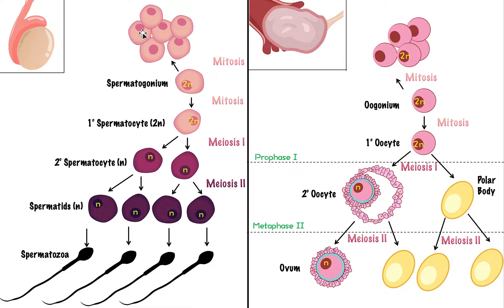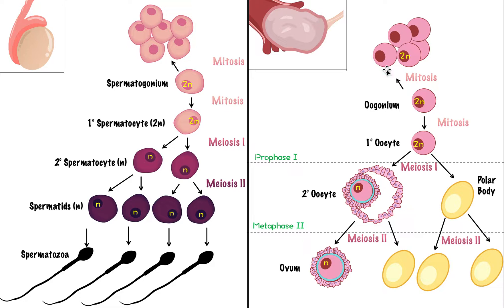Another key difference is timing of onset. For a male, spermatogenesis starts at puberty — around age 12, depending on the person. Whereas for a female, the cycle actually begins before puberty — in fact it begins while the girl is still a fetus inside the mother. So part of the process happens before puberty and then continues after the girl reaches puberty. Spermatogenesis starts entirely at puberty; in oogenesis, some of the process starts before puberty in the fetal stage.